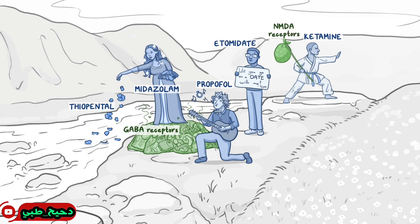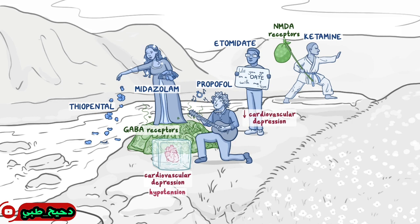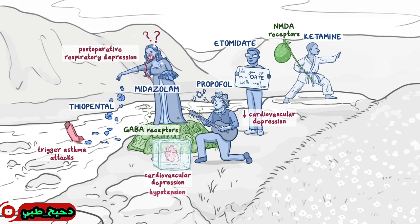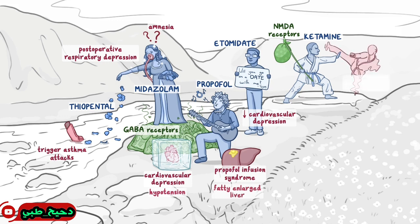For side effects and contraindications, let's put the maiden's heart in a big block of ice, so you know that she and the drugs around her — thiopental, propofol, and etomidate — cause cardiovascular depression, which can lead to hypotension. Etomidate is further away from her, so it has less cardiovascular depression compared to the others. Ketamine isn't interested in her, so it doesn't have this side effect at all. There's an asthma inhaler in the river with the flower petals to help you remember thiopental can trigger asthma attacks. The maiden has a breathing mask for postoperative respiratory depression, and she's got a question mark above her head since she tends to forget her suitor's name, which represents amnesia. For propofol, let's have a giant liver with a piece of butter on it to remind you of propofol infusion syndrome, which decreases fatty acid metabolism and leads to a fatty enlarged liver. Ketamine causes delusions and hallucinations, so let's have the karate man train against an imaginary opponent.